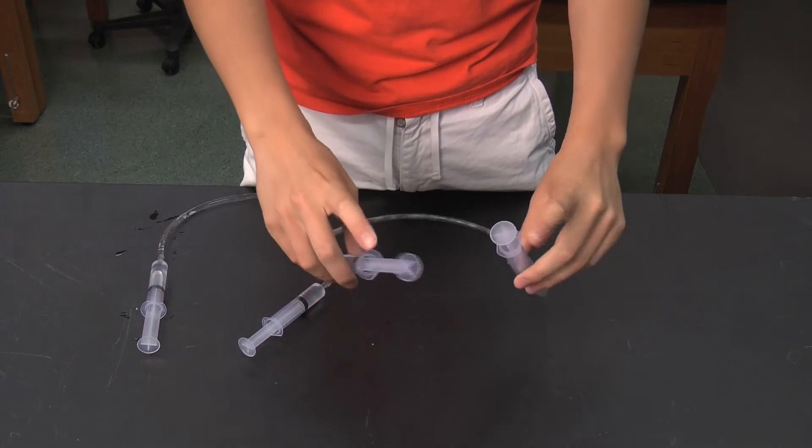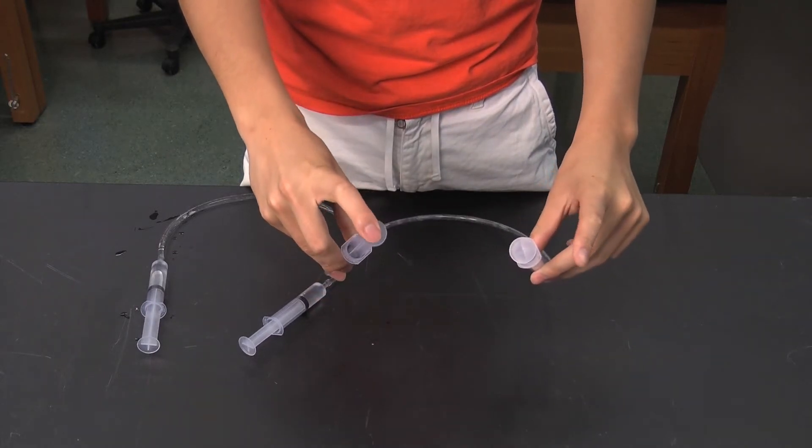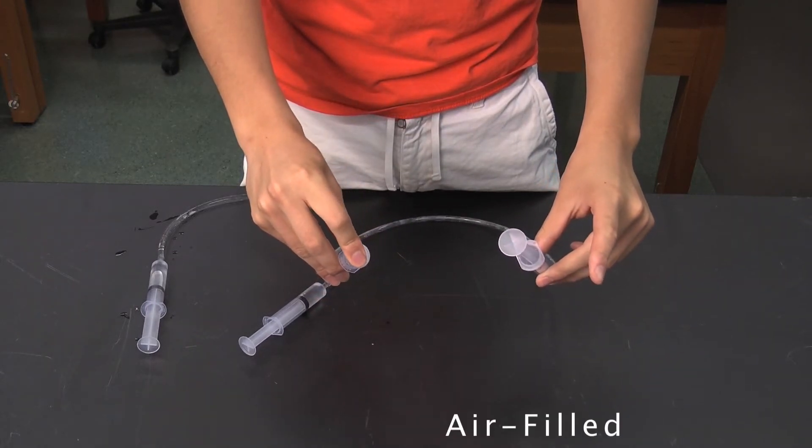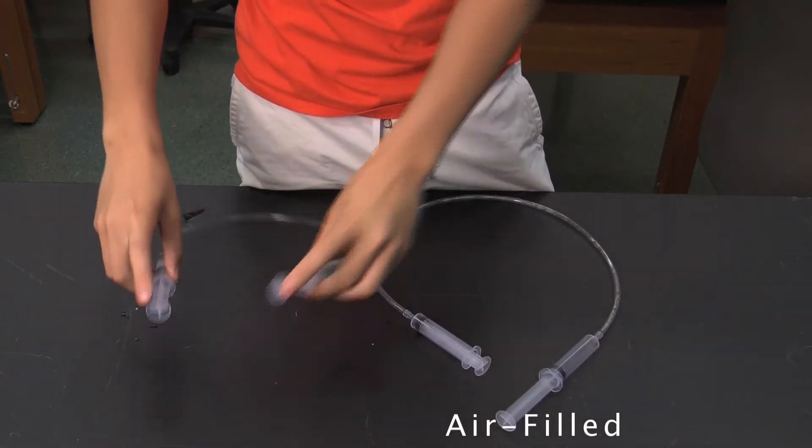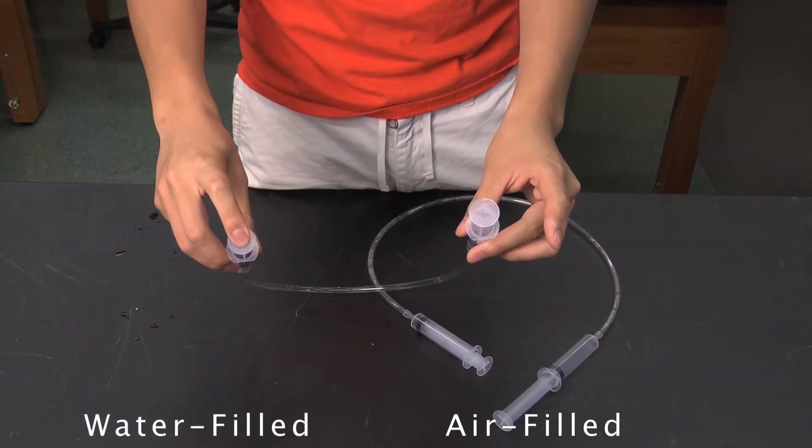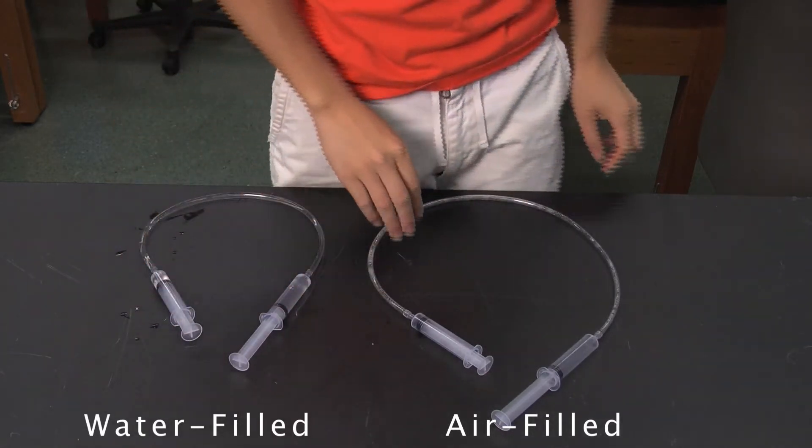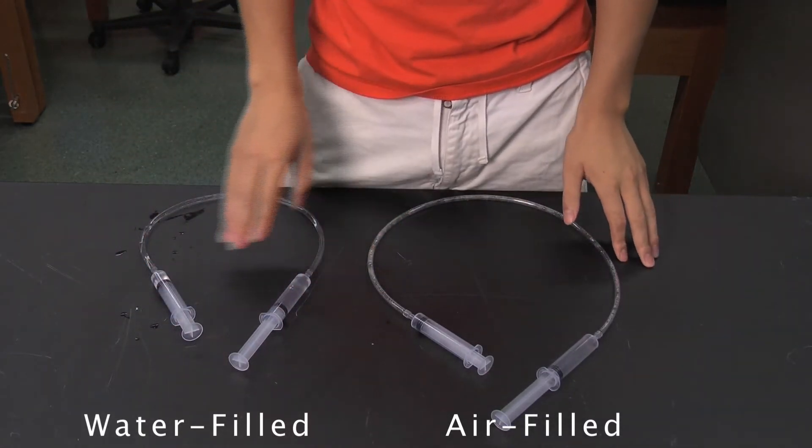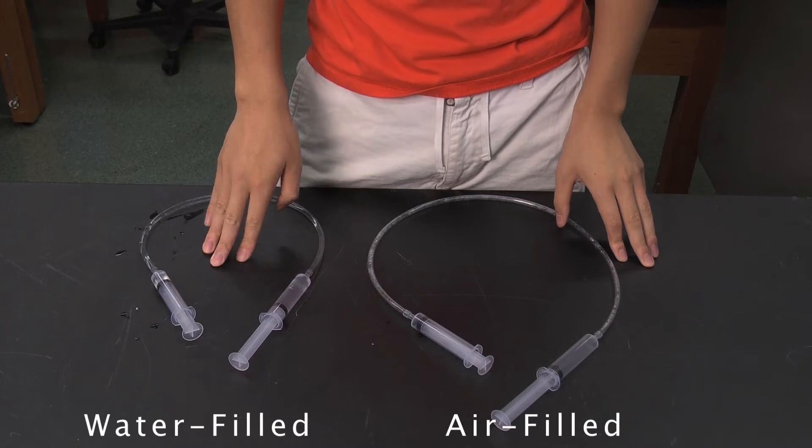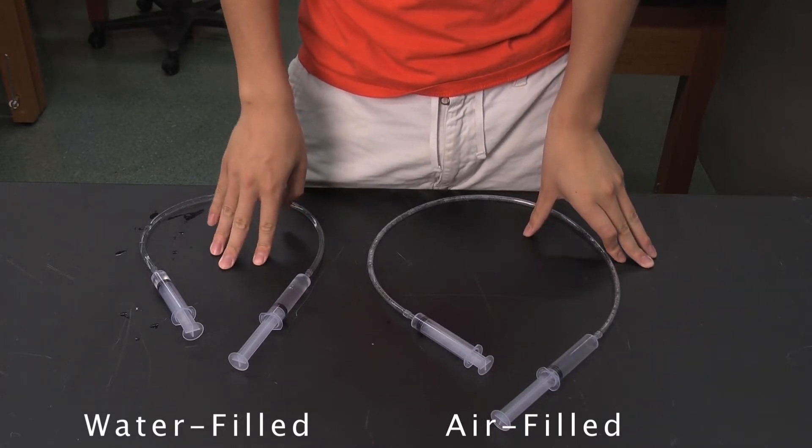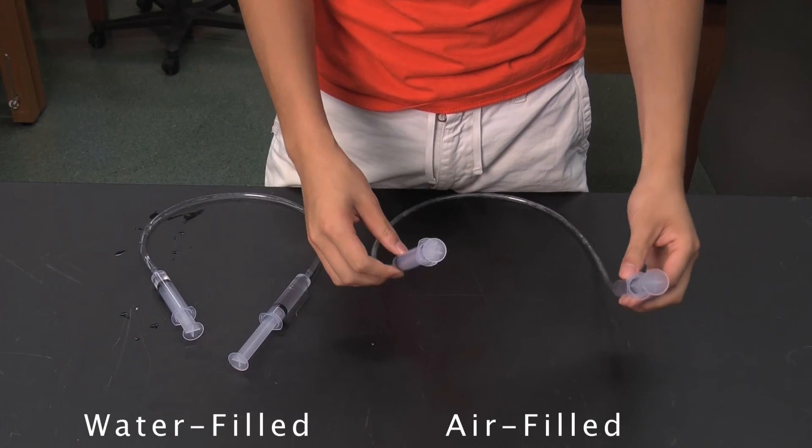Ask the students to tell you what differences they notice between the two systems, the air-filled system and the water-filled system. Your students may notice that the air-filled system does not work as fast or as well as the water-filled one. Ask them what it means for the system to not work as well and why they think it doesn't work as well or as fast.